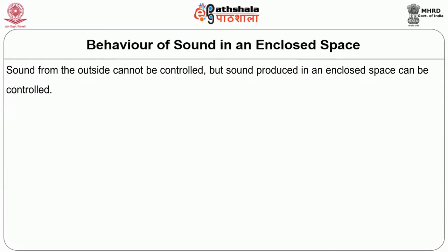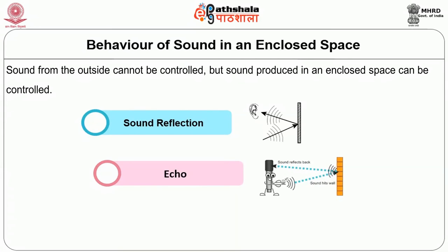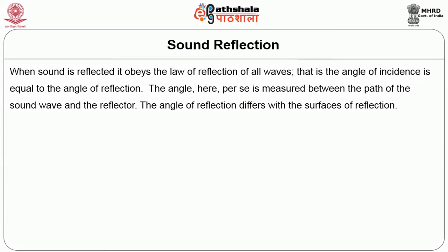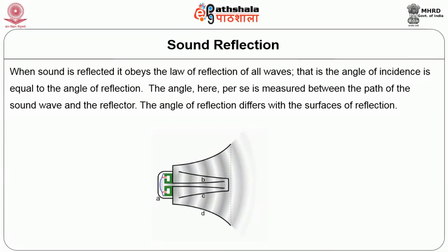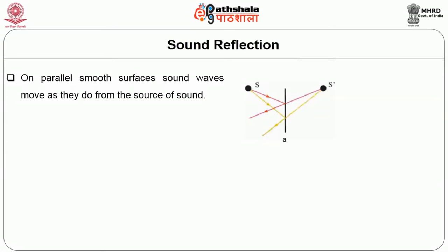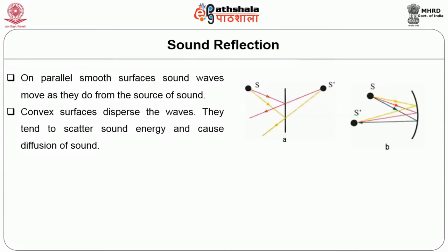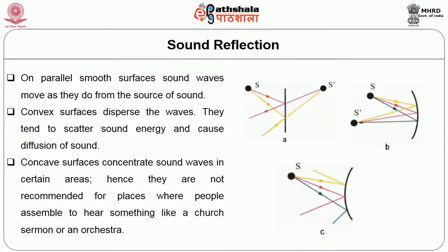Terms related to sound behavior in an interior can be broadly delineated as sound reflection, echo, and reverberation. When sound is reflected, it obeys the law of reflection: the angle of incidence equals the angle of reflection. On parallel smooth surfaces, sound waves move as they do from the source. Convex surfaces disperse the waves, scattering sound energy and causing diffusion of sound. Concave surfaces concentrate sound waves in certain areas and are not recommended for places where people assemble to hear something, like a church sermon or an orchestra.